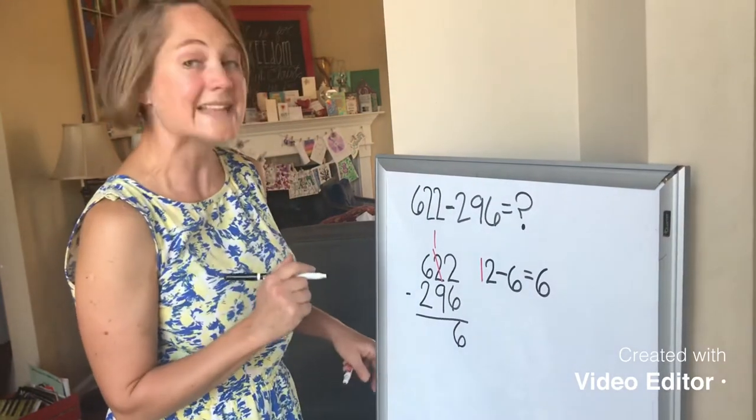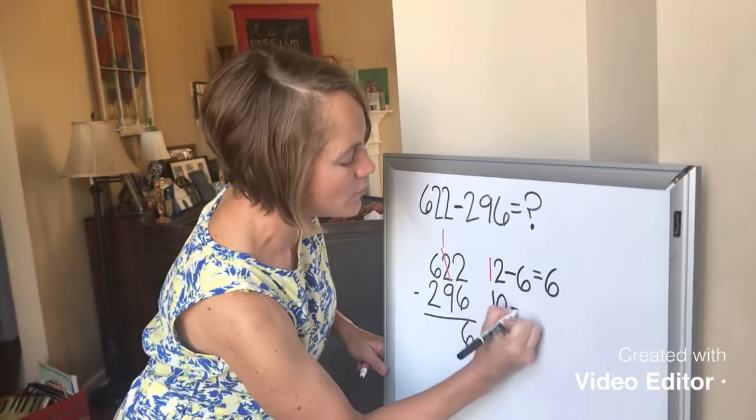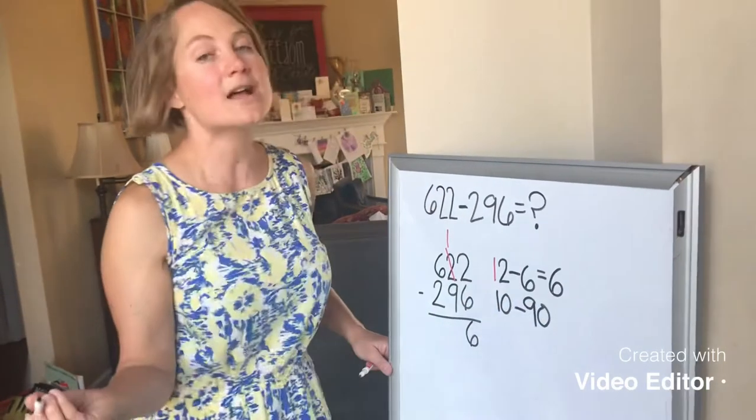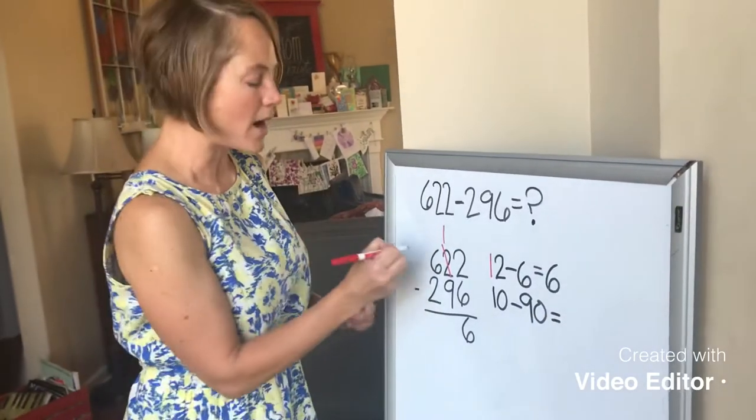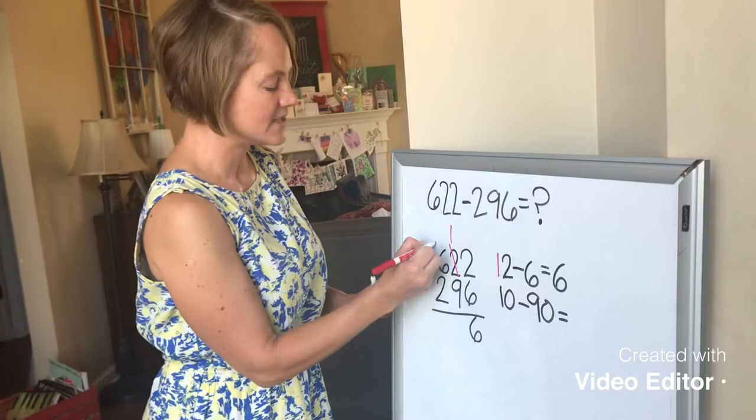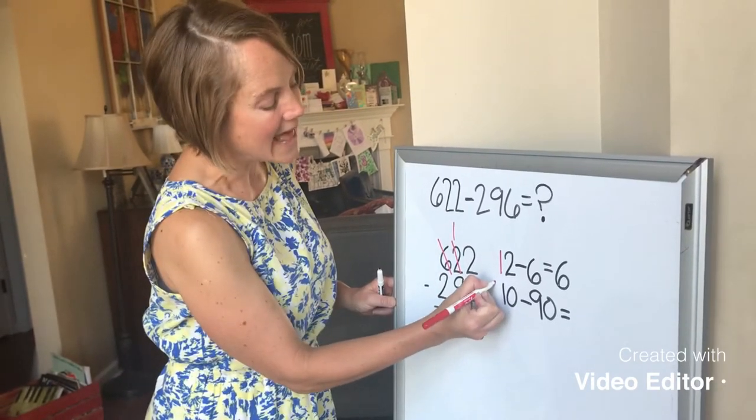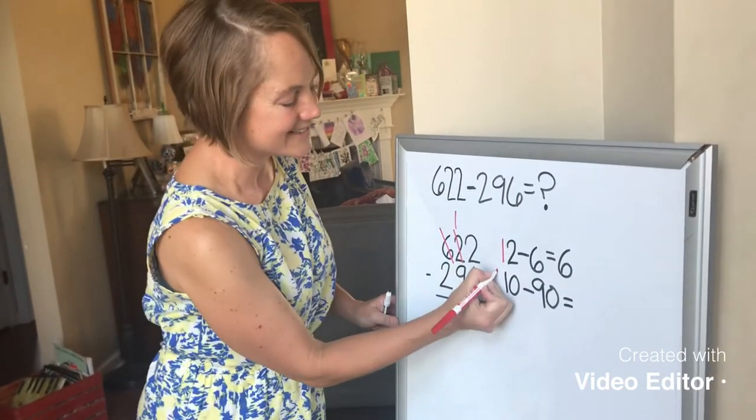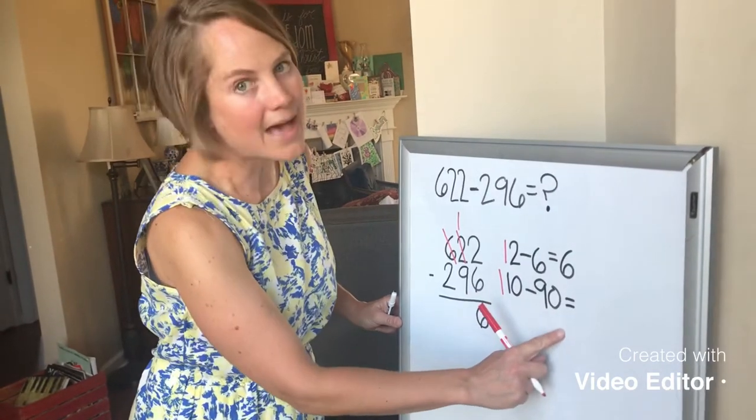Now we can subtract our 10s. So I have 10, and I'm going to take away 9 10s. That's a value of 90. And that's not going to work either. So I'm going to have to borrow again. This time I'll borrow from my 100s. So I'm going to cross off 600, and I'm going to give 100 right here to 10, and now I've got 110 minus 90, and that will work.